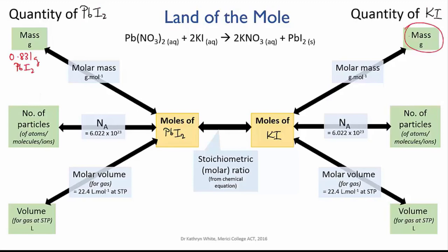So the steps of the calculation are we need the molar mass of lead iodide. We'll then use that to work out the moles of lead iodide. We'll use the mole ratio from the equation to work out how many moles of potassium iodide must have reacted.